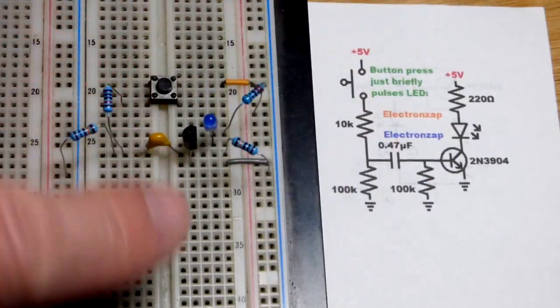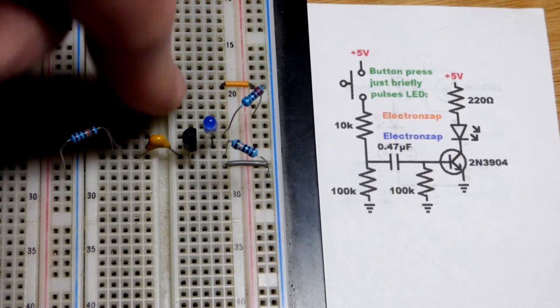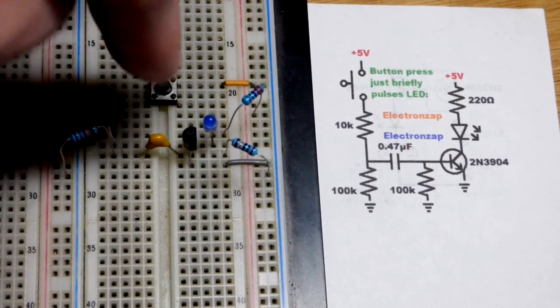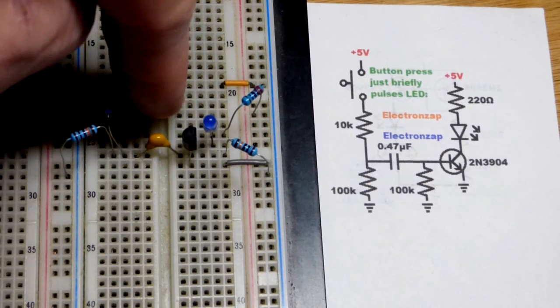So now in this video, we have a circuit where we have an LED, a push-button switch, and when I press and hold the switch, we just get a brief flash of the LED.